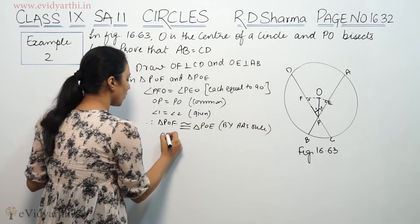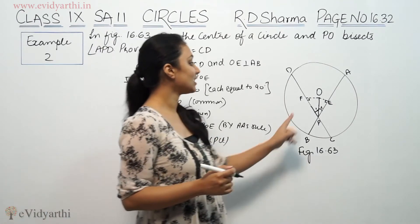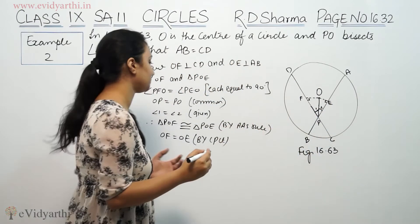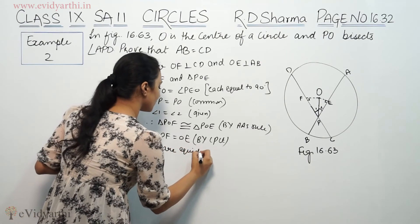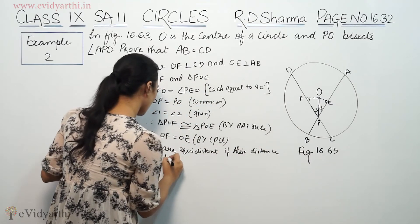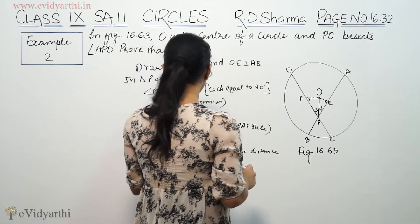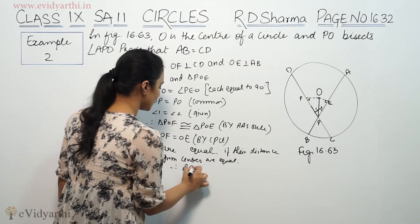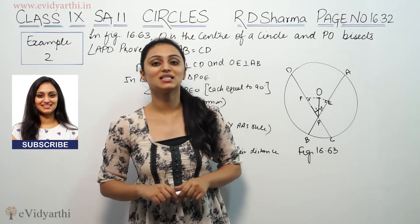Since the triangles are congruent, OF is equal to OE by CPCT — corresponding parts of congruent triangles are equal. If the distances from the center to the chords are equal, then the chords are equal. So AB is equal to CD. This was example 2 from R.D. Sharma. Do watch the next video for more questions. Goodbye.